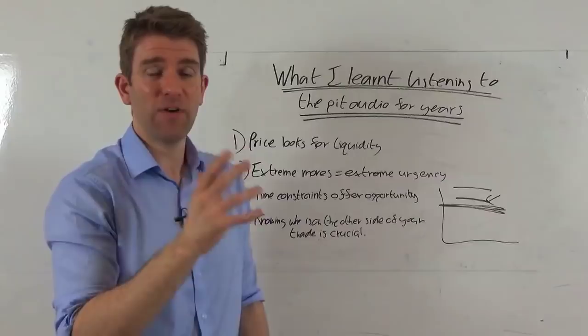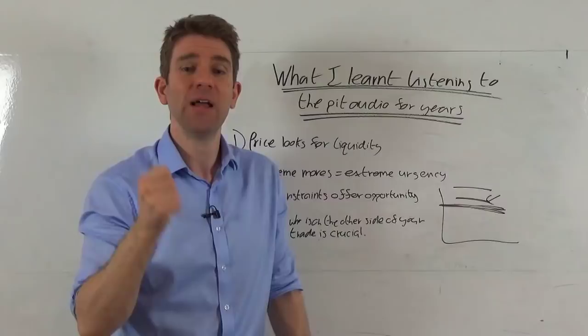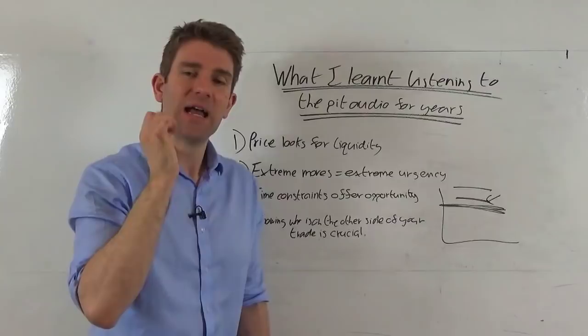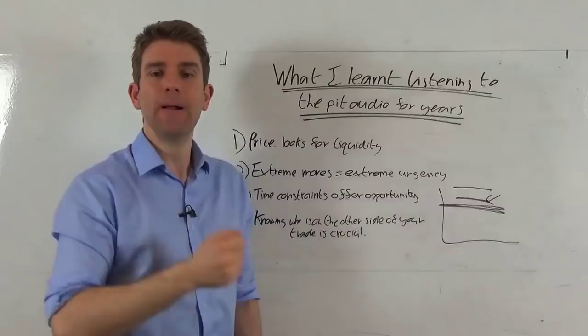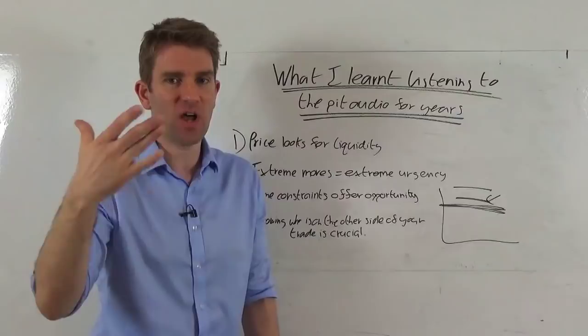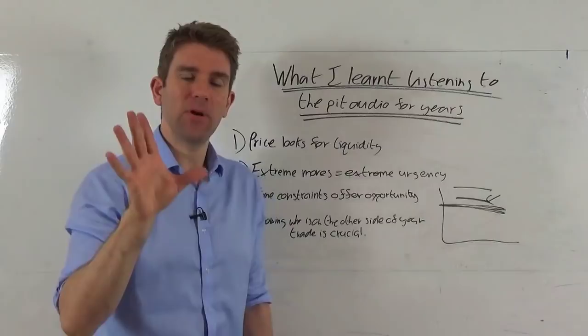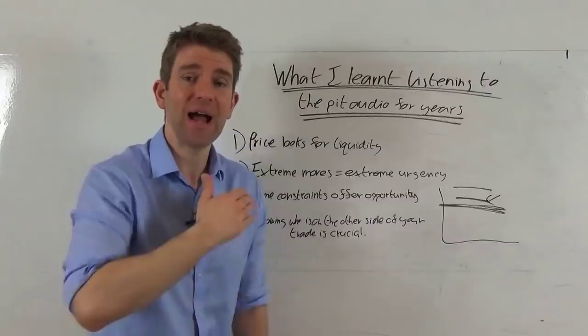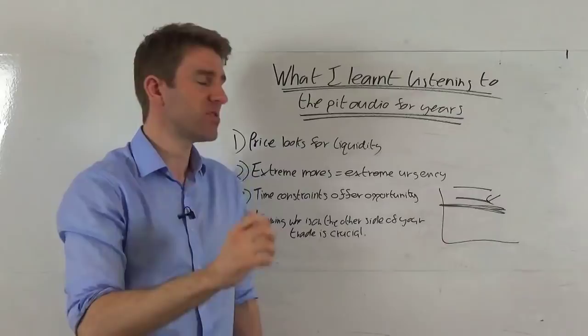Number two, extreme moves, extreme urgency. When things were kicking off and they were moving, guys were screaming. You could hear them absolutely screaming. Of course, they're trying to get filled. They're trying to get filled for themselves, for a client. They're trying to get out. They're losing money, they're making money. Extreme moves, extreme urgency. What does that mean for us? It means that as price starts to get really moving, shifting aggressively, price sensitivity goes out the window. People want to get in quickly. That offers us opportunity. I've said this before. When price is moving, when it's active, people are using market orders. So they're not price sensitive. They're time sensitive. They do not want to wait. They want to get in or out now. And that offers us opportunity because you've got a crowd of people doing that. That is going to move the price. That is what causes price to move up or move down. We can make money from that.